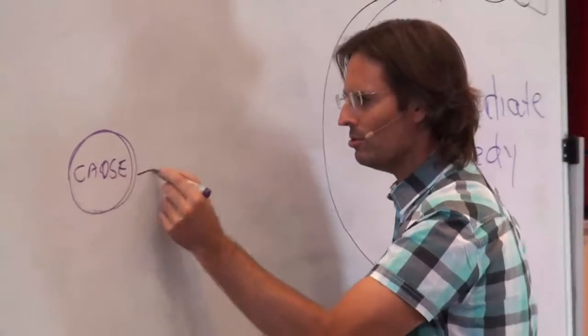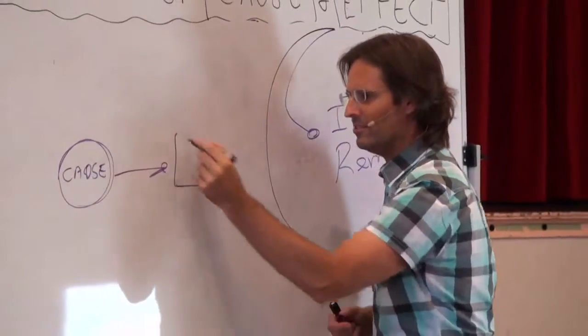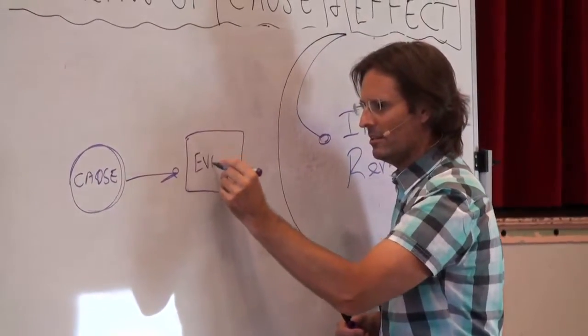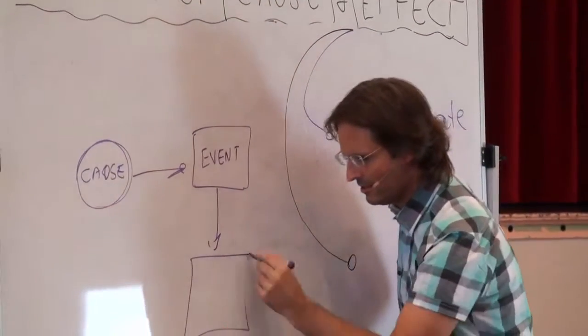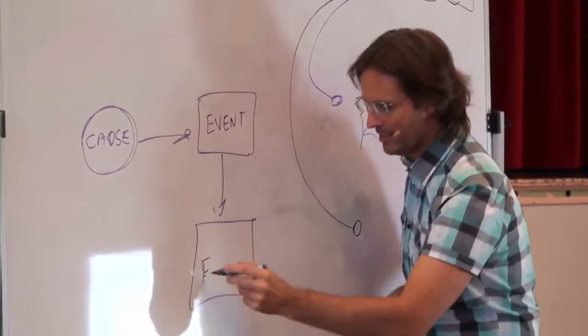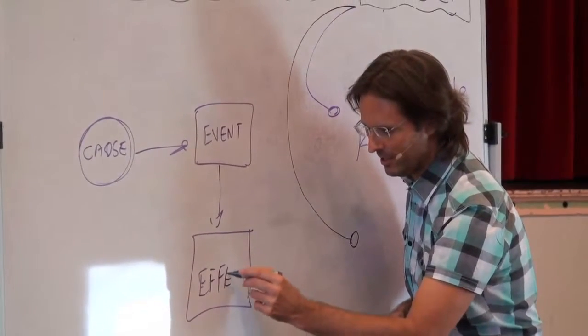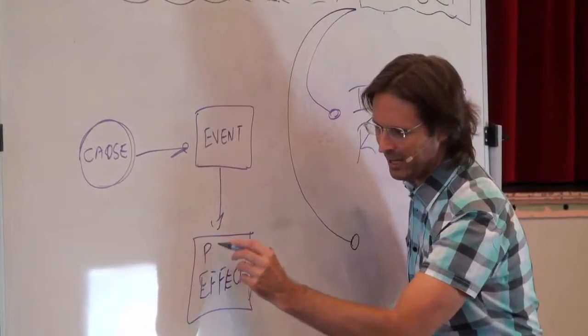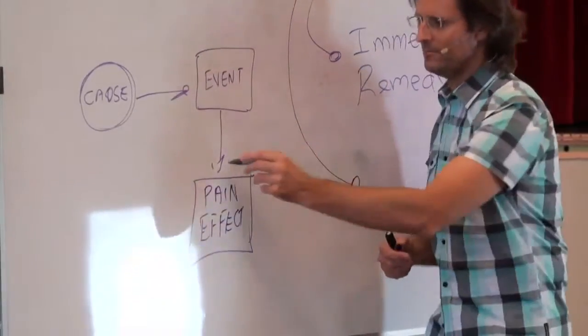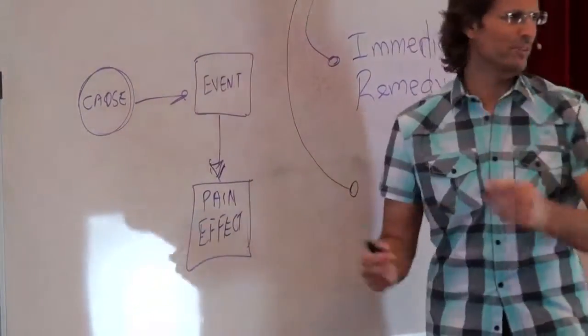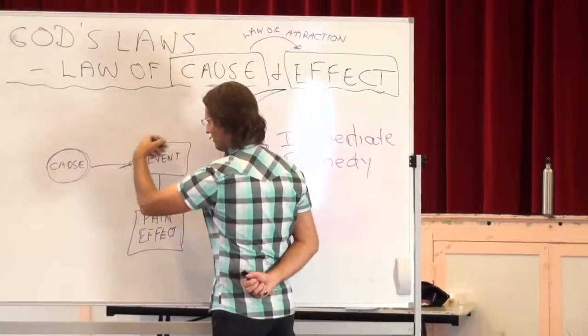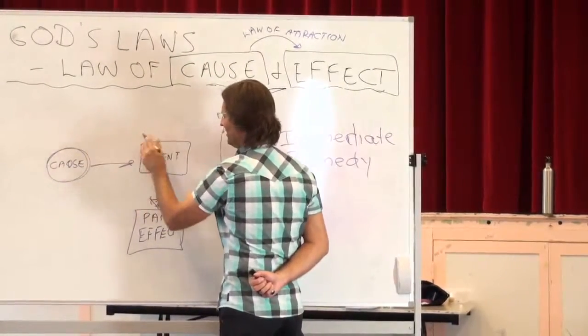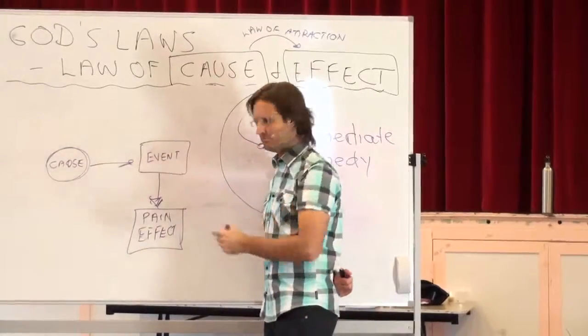That cause causes an event to occur, which has its effect on us emotionally. And let's say it's a pain-based effect at this point, because these are the ones we avoid, the pain ones. So the law of attraction operates between the cause and effect, so the event is actually all about the law of attraction.